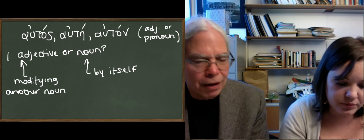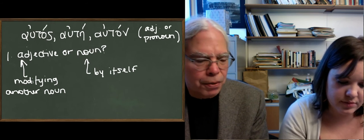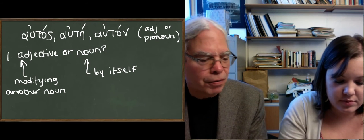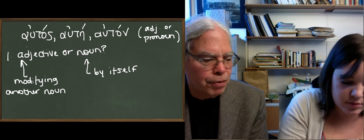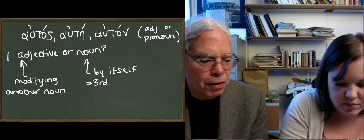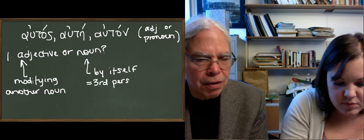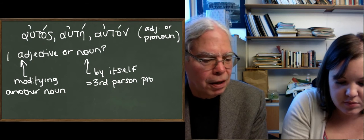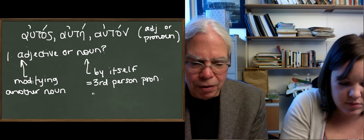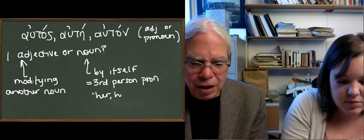All you have to do is look at the gender number in case of the form of autos, and if there's any other noun that has the same gender number in case, it's an adjective. If it's a noun, here's what it means. It's the third person pronoun. This is the first time we have an actual Greek personal pronoun. It means her, him, or it.